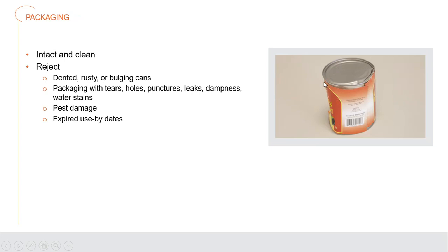With cans, look for a big dent, bad ripple, or possible opening where the can may no longer be properly sealed. Reject anything that is dented, rusty, or bulging — bulging can indicate damage to the seal and fermentation inside. Also reject packaging with tears, holes, punctures, leaks, dampness, water stains, or pest damage, and especially reject anything with an expired date.